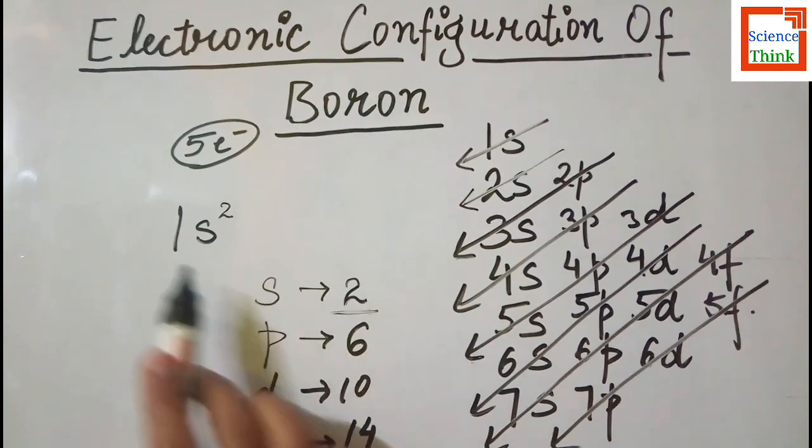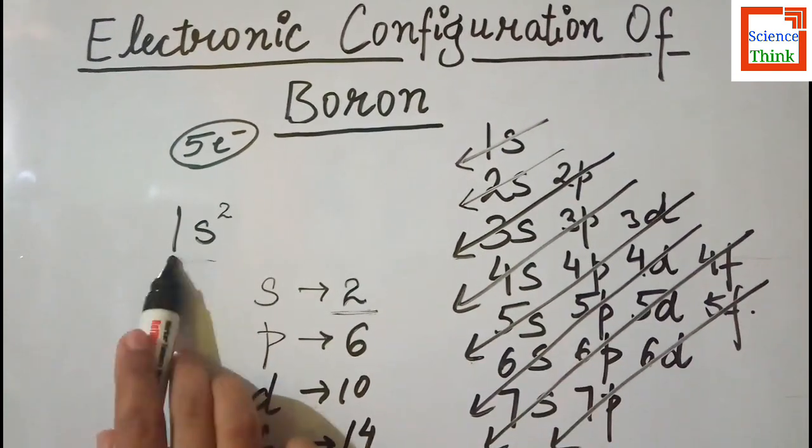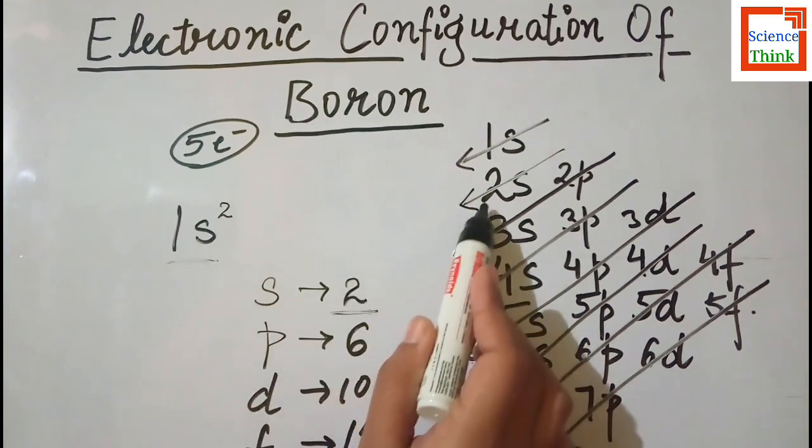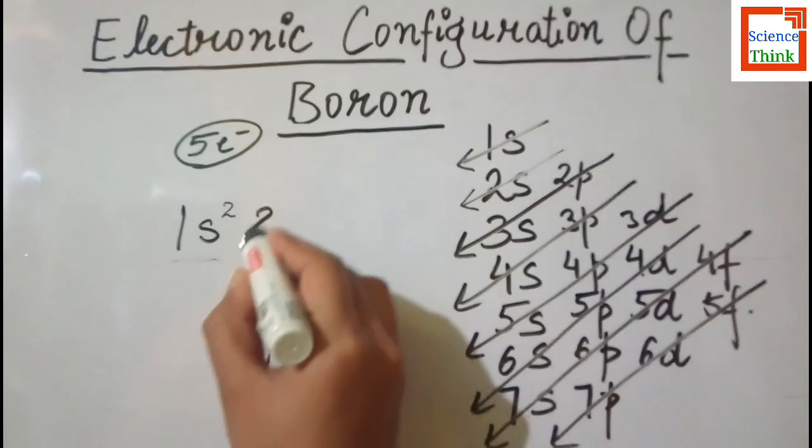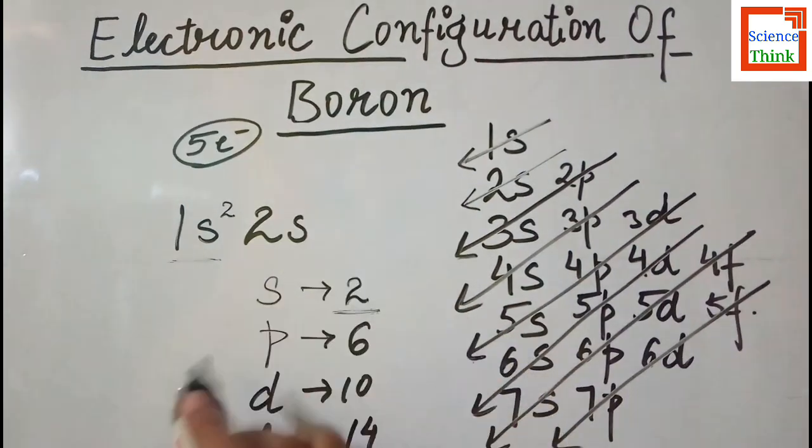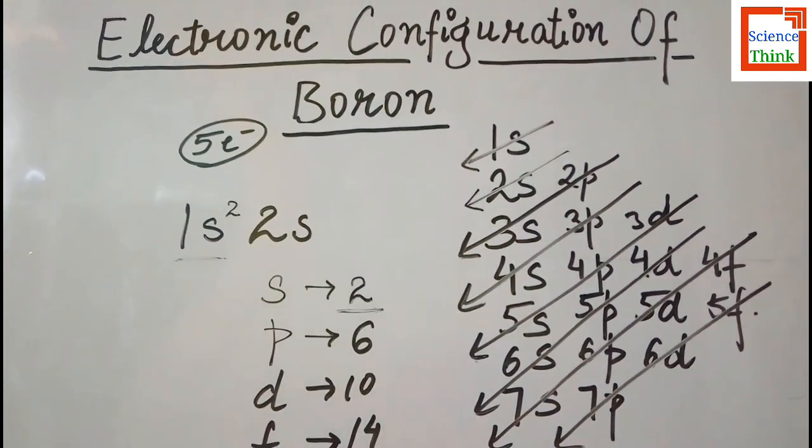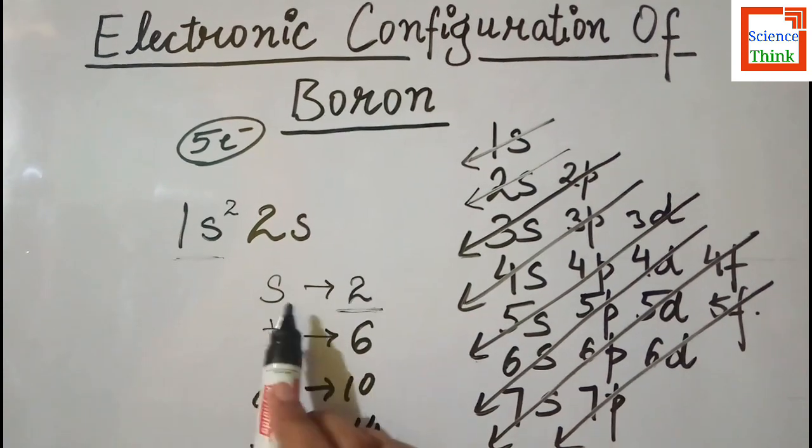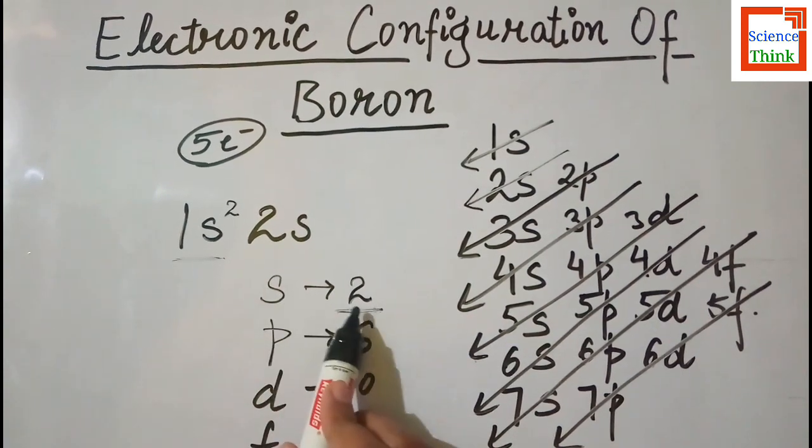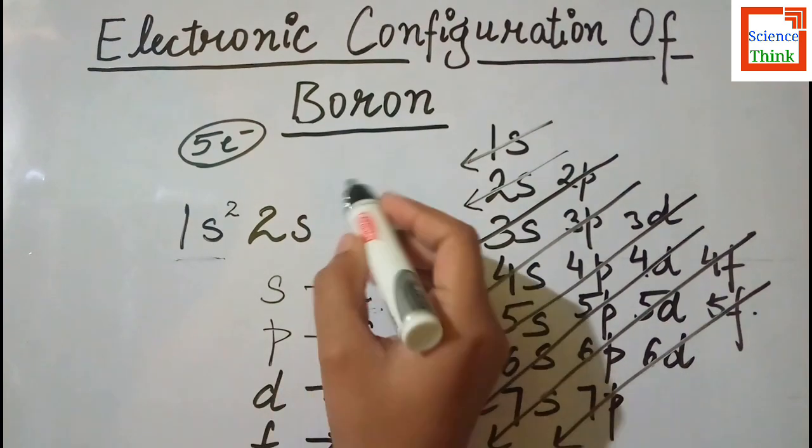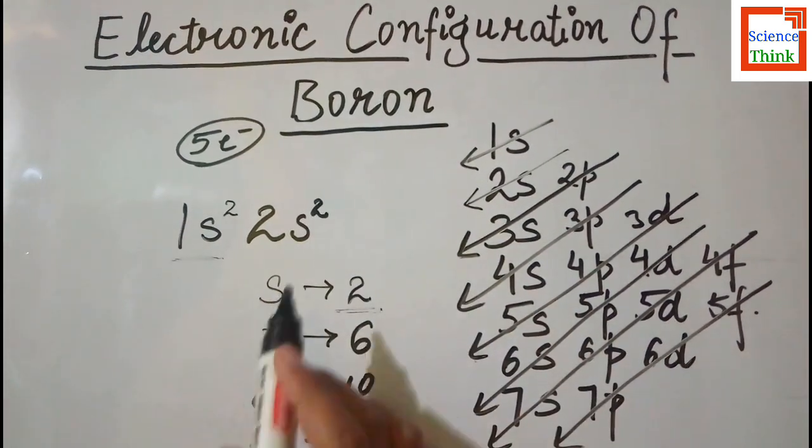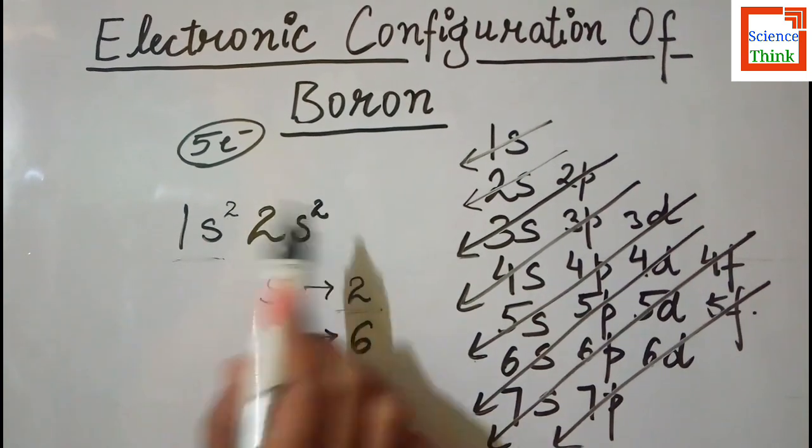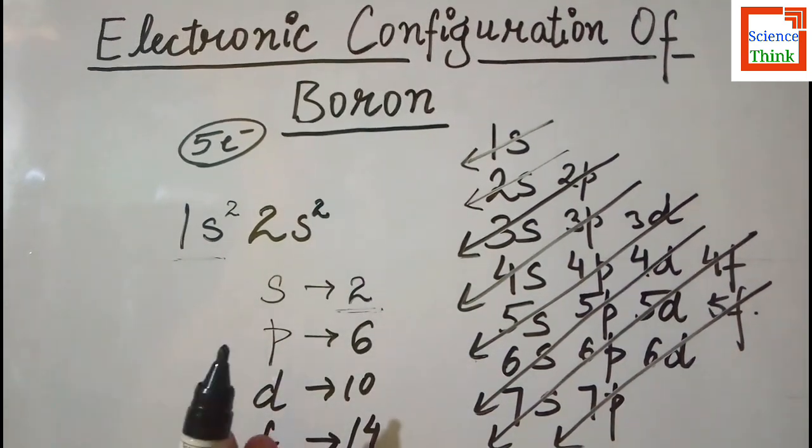Now we will see after 1s which orbital is going to be filled. So here we have 1s then 2s. So we will write 2s after 1s. And again we know s orbitals can accommodate only 2 electrons, so we write 2. Now we have total 4 electrons which have been taken into account.